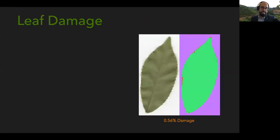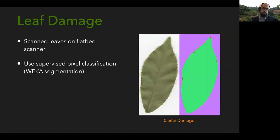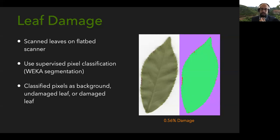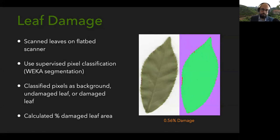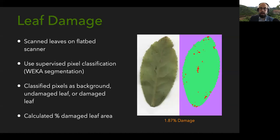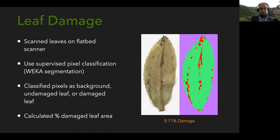In addition to measuring leafhopper density, I also measured leaf damage by scanning leaves on a flatbed scanner and using a program called Fiji with a trainable Weka segmentation algorithm — a trainable pixel classification algorithm. I tell it what undamaged leaf area looks like, what damaged leaf looks like, and what background looks like, and it classifies pixels into these three types. Red pixels are damaged areas, green is undamaged, and purple is background. So we can calculate the percent damaged leaf area.